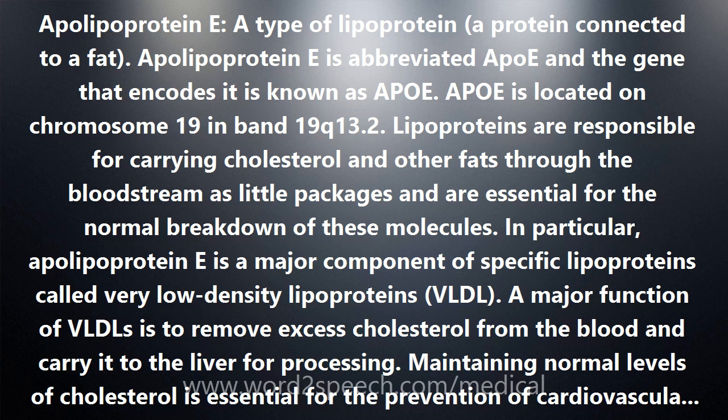Maintaining normal levels of cholesterol is essential for the prevention of cardiovascular diseases, including heart attacks and strokes. There are three isoforms — slightly different forms — of the apolipoprotein. These three isoforms are known as APOE2, E3, and E4. They are encoded by slightly different versions, or alleles, of the APO gene.